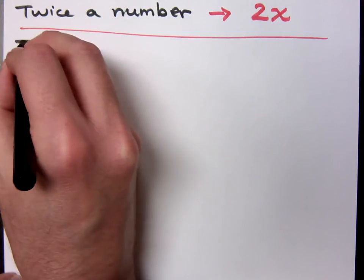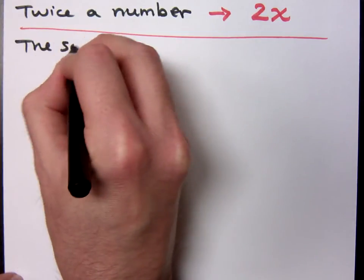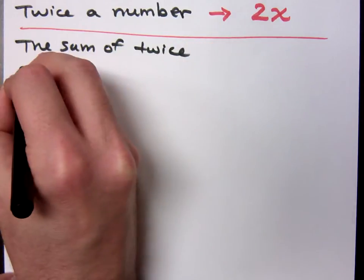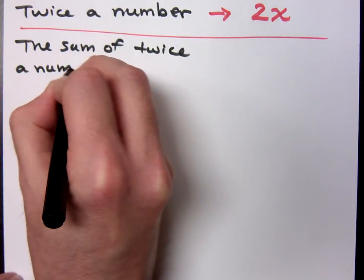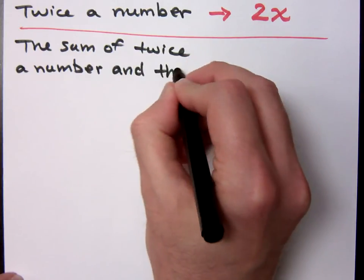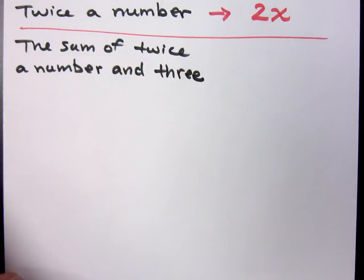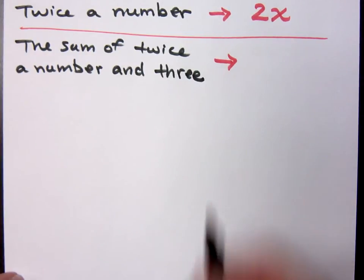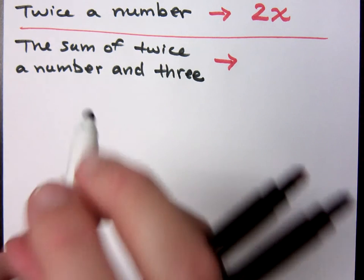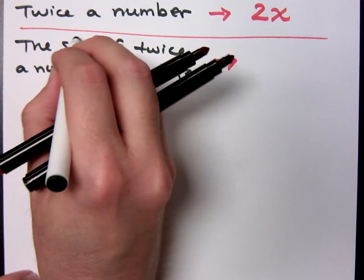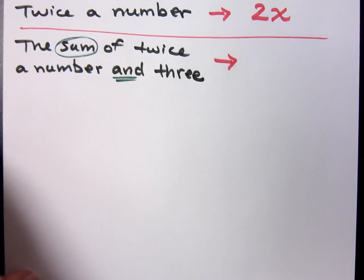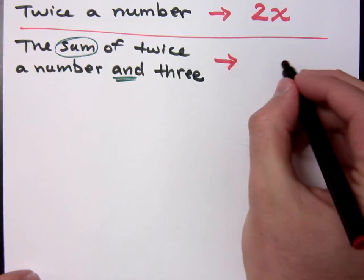What if I say this? The sum of twice a number and 3. What's the first math word you see? Okay. The first math word I see is sum. 2x plus 3. Right, sum and there's your and, right?